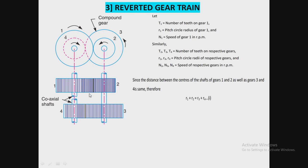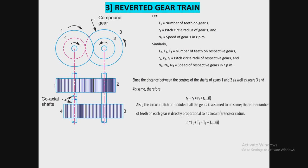Since the center distance between the shafts of gear 1 and 2 is the same as between gears 3 and 4, we get the equation: R1 + R2 = R3 + R4. Also, since the circular pitch module of all gears is assumed to be the same, the number of teeth on each gear is directly proportional to its radius. Therefore, similarly: T1 + T2 = T3 + T4.